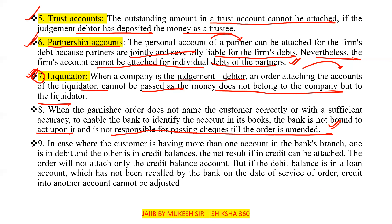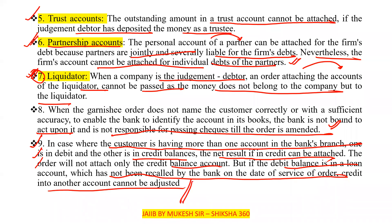In a case where the customer has more than one account in the bank's branch — one in debit and another in credit balance — the net result, if in credit, can be attached. The order will not attach only the credit balance account. But if the debit balance is in a loan account which has not been called by the bank on the date of service of the order, the credit in another account cannot be adjusted — that is, there is no installment due, so the credit in another account cannot be adjusted.